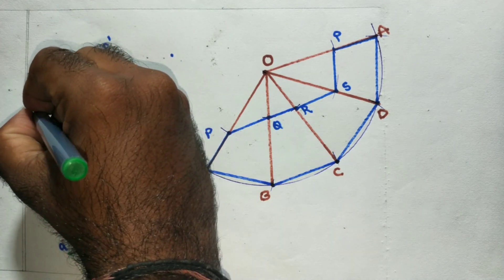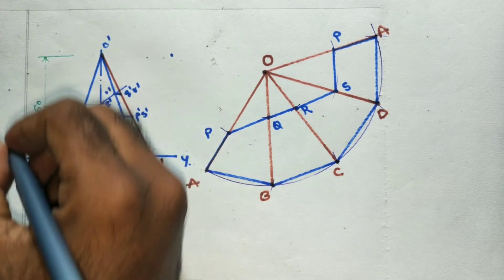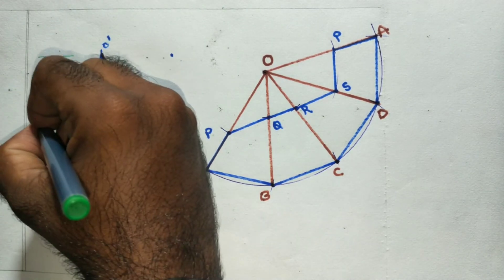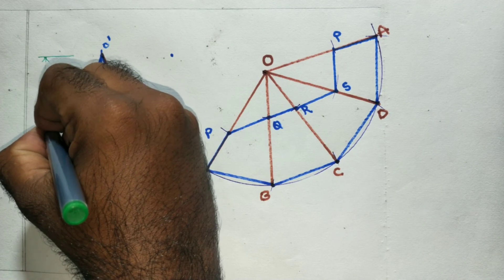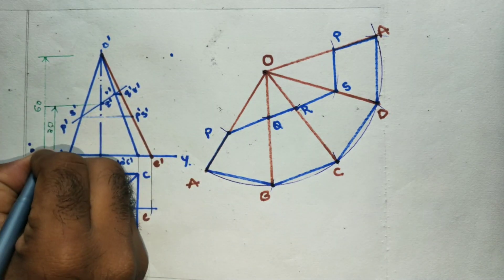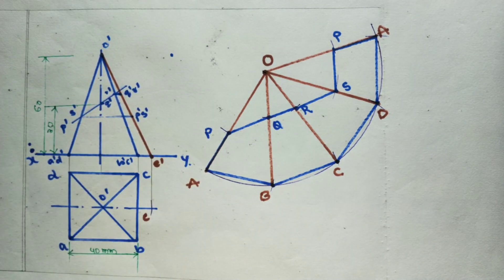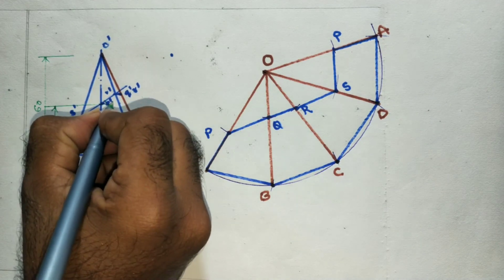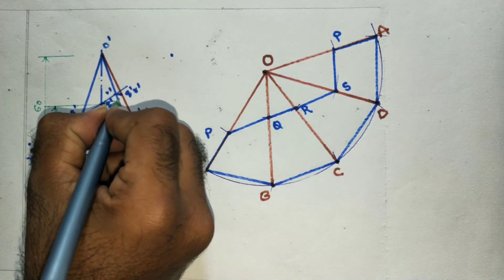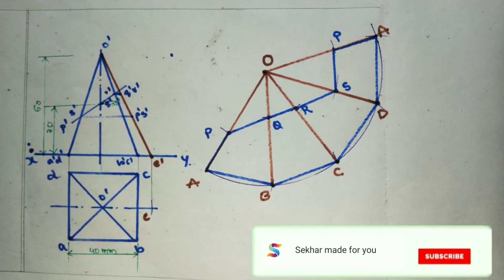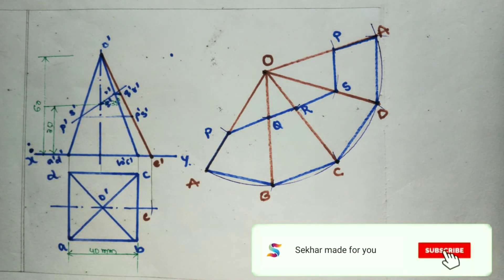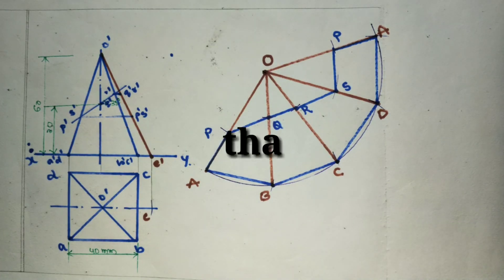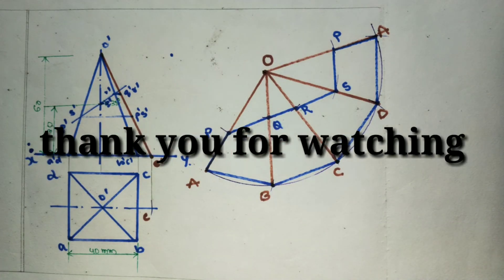The dimensions used are: 60 mm height, 30 mm axis point, and the angle is 35 degrees. If you like the video, please like and share. Thank you for watching — please comment in the comment section.